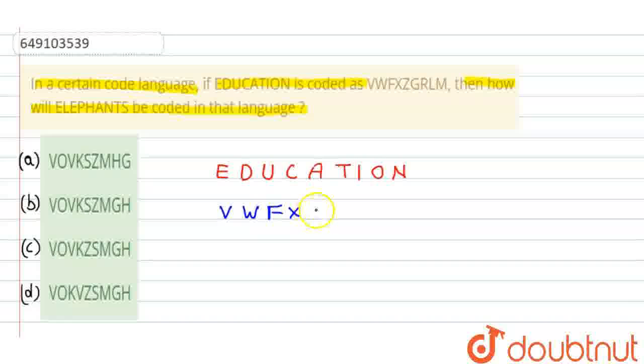Now, let us see that E is coded as V. If we see the English alphabet, it is the fifth term. Fifth term. Now V, then it is the 22nd term.